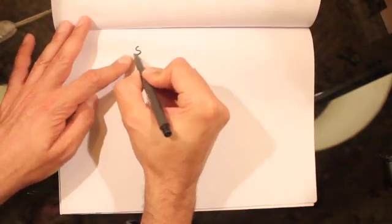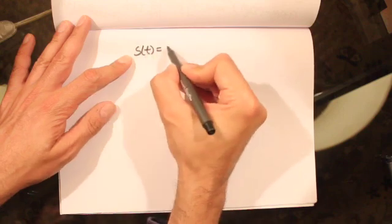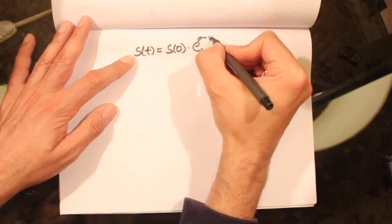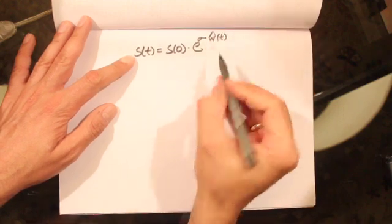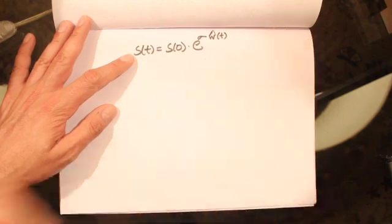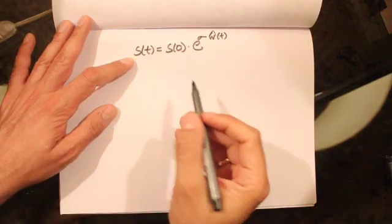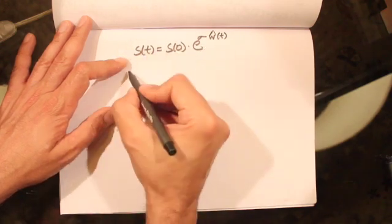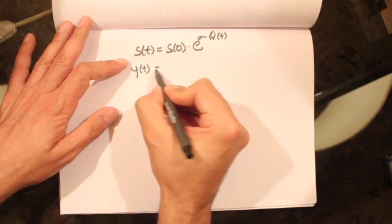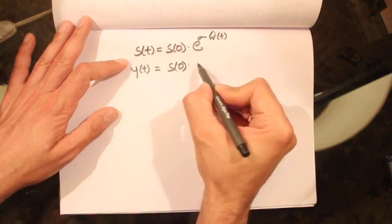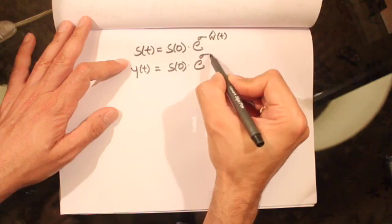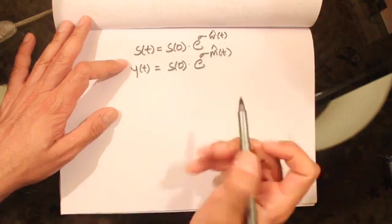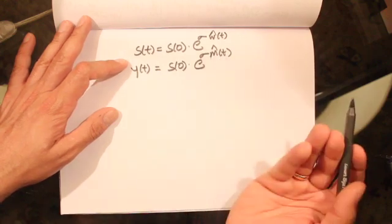From the previous lecture we saw that the stock price can be written as S0 times e to the power of sigma ŵ(t), where ŵ(t) was a Brownian motion with a drift. We also looked at the maximum value the stock takes between time 0 and t, given by y(t), equal to S0 times e to the power of sigma m̂(t), where m̂(t) is the maximum value the Brownian motion takes between time 0 and t.